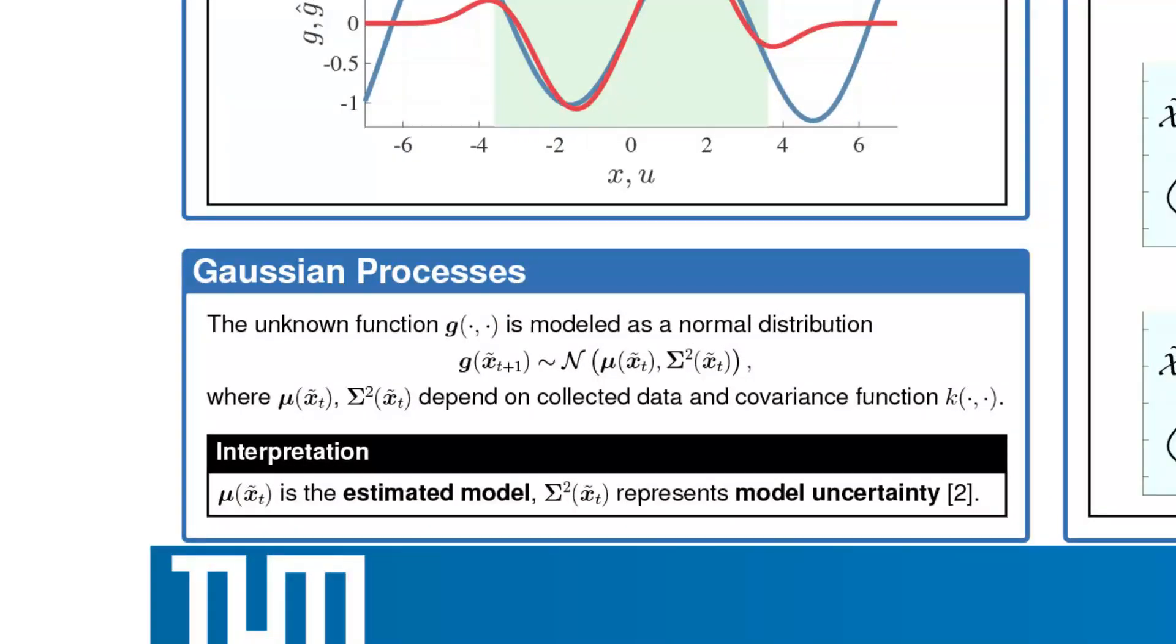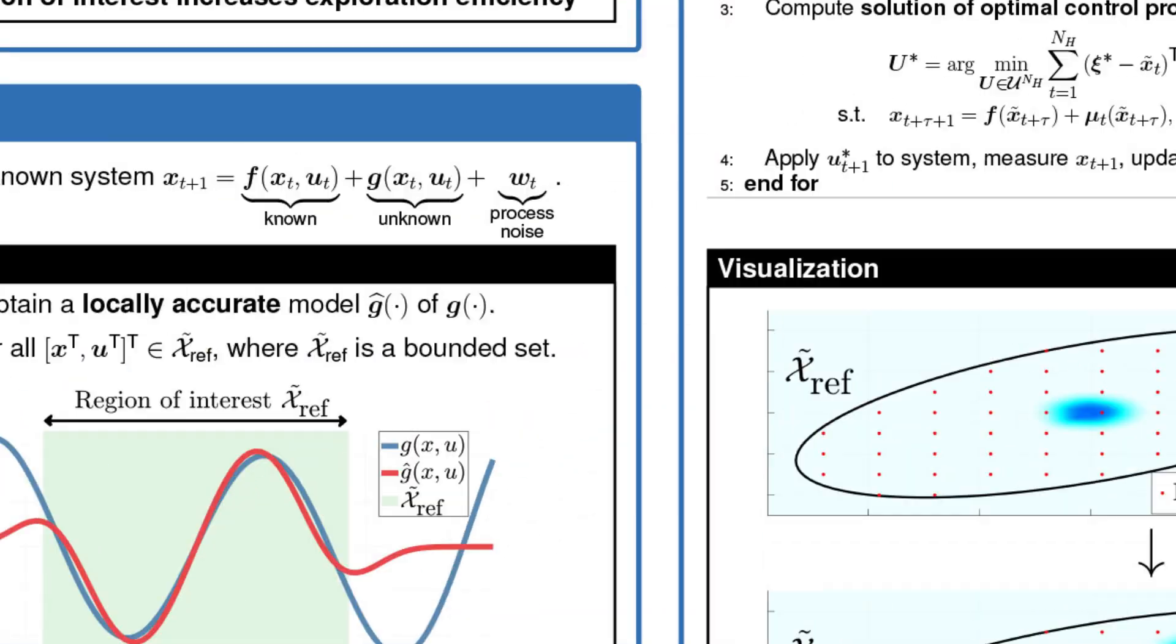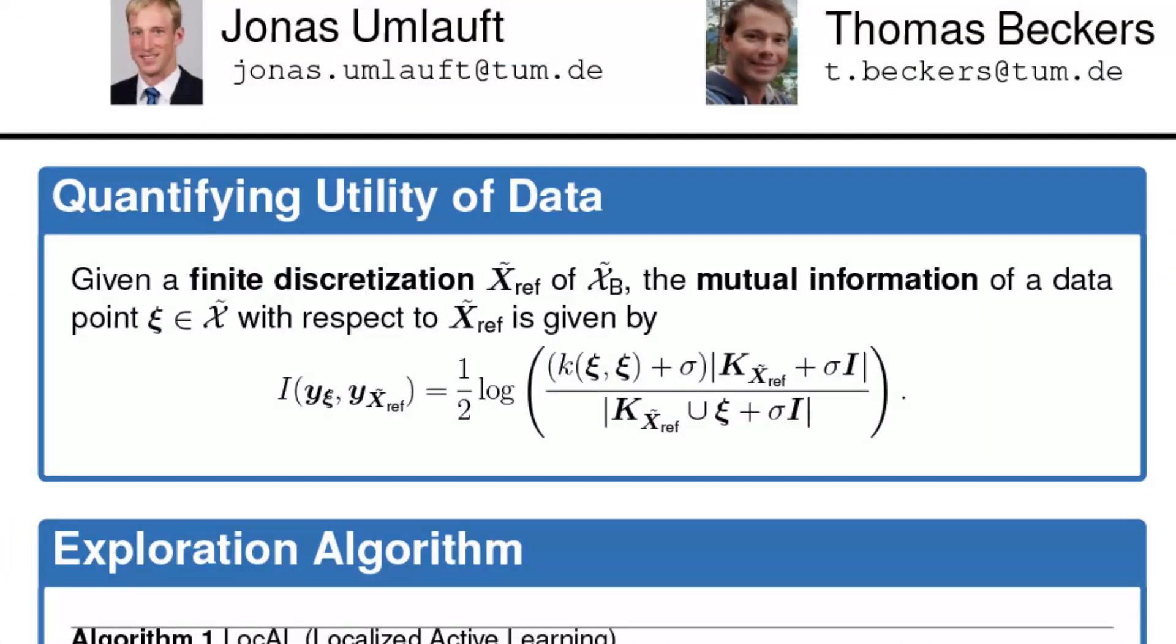In order to capture the uncertainty associated with the unknown function g, we assume a probability distribution over g. This is expressed by a Gaussian process, which assigns a Gaussian distribution to any finite number of function evaluations depending on the collected data. Once we have modeled the uncertainty, we aim to quantify the utility of data points collected in the future.